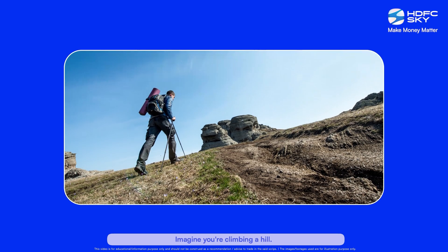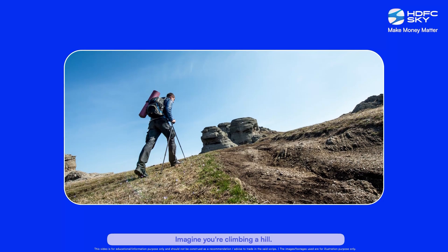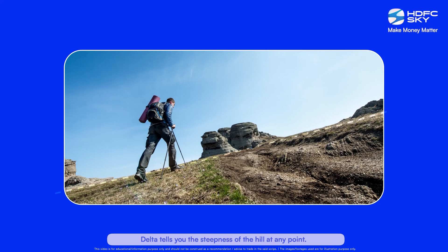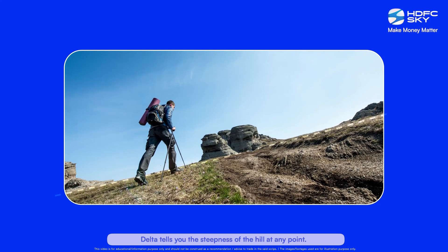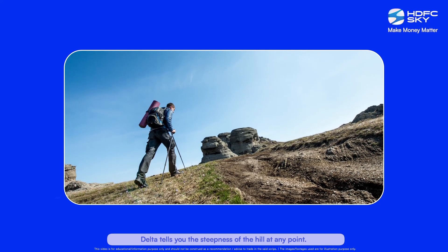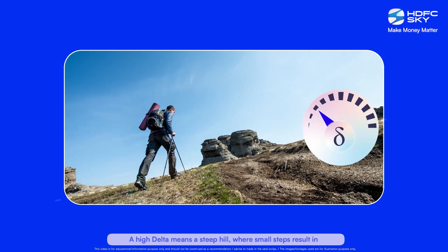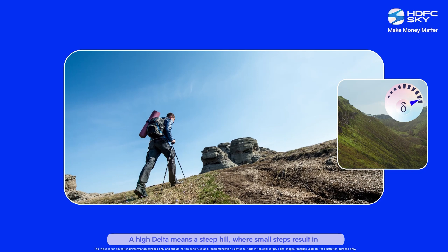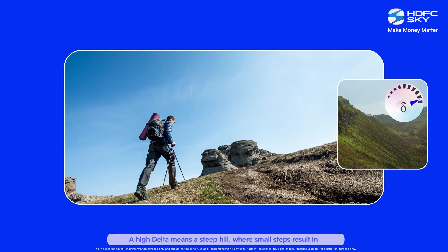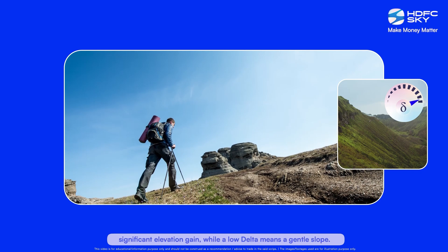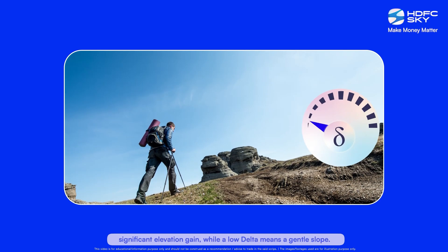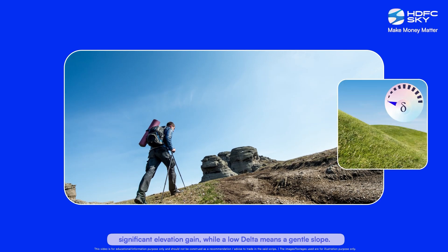Imagine you are climbing a hill. Delta tells you the steepness of the hill at any point. A high Delta means a steep hill where small steps result in significant elevation gain, while a low Delta means a gentle slope.